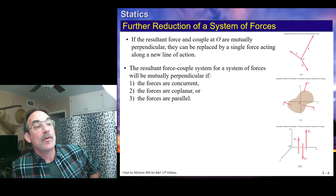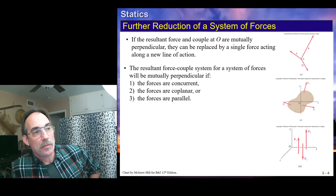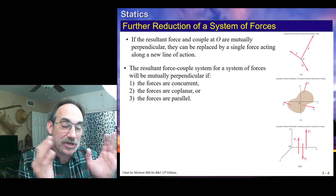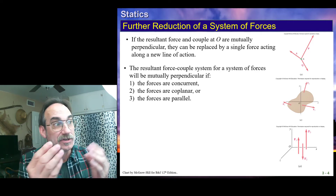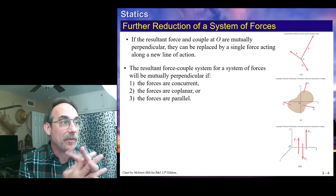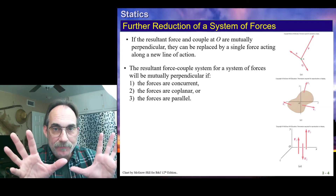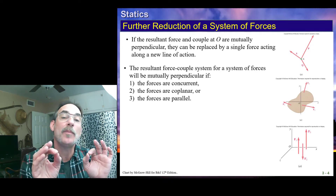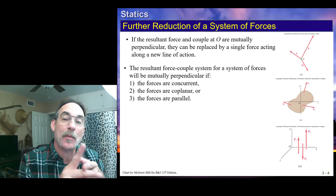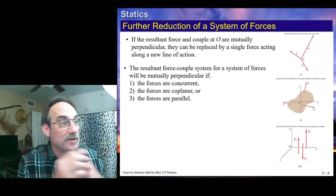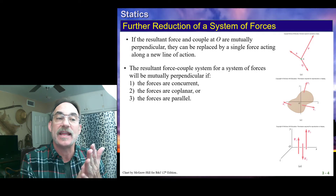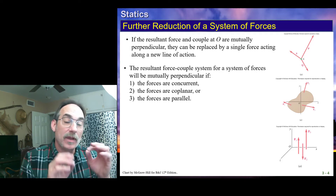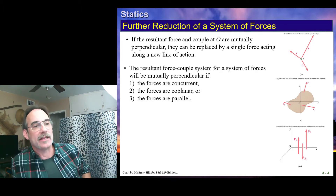The resultant force couple system will be mutually perpendicular if the forces are concurrent — meaning there's a point where they all pass through. If all forces on the body are concurrent, we can reduce that system to a single force and single moment that are mutually perpendicular, which means we can actually reduce it to a single force. If the forces are coplanar — all lying in a plane — that will be true as well. If all the forces are parallel, we can also find an equivalent mutually perpendicular system.